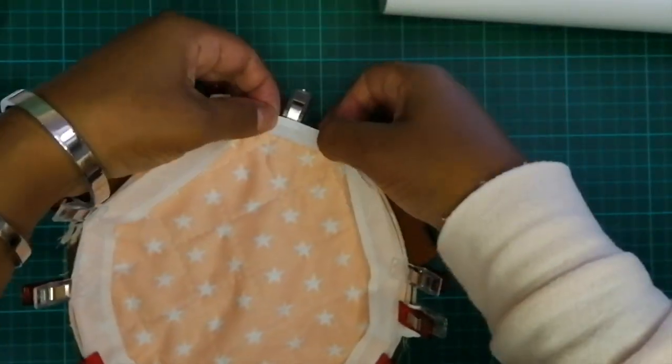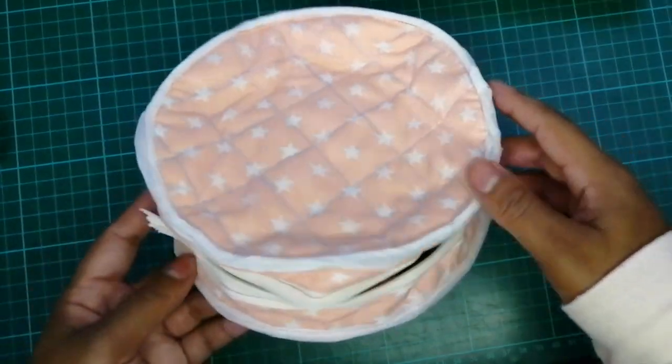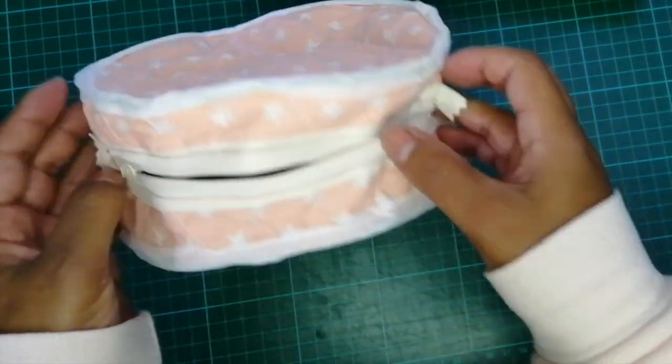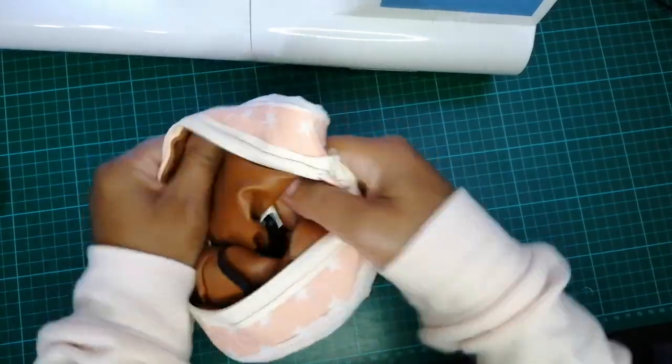Once that's done, cut the excess material from the ears, fold the bias over and sew again. The inside is now complete, so turn the bag right side out.